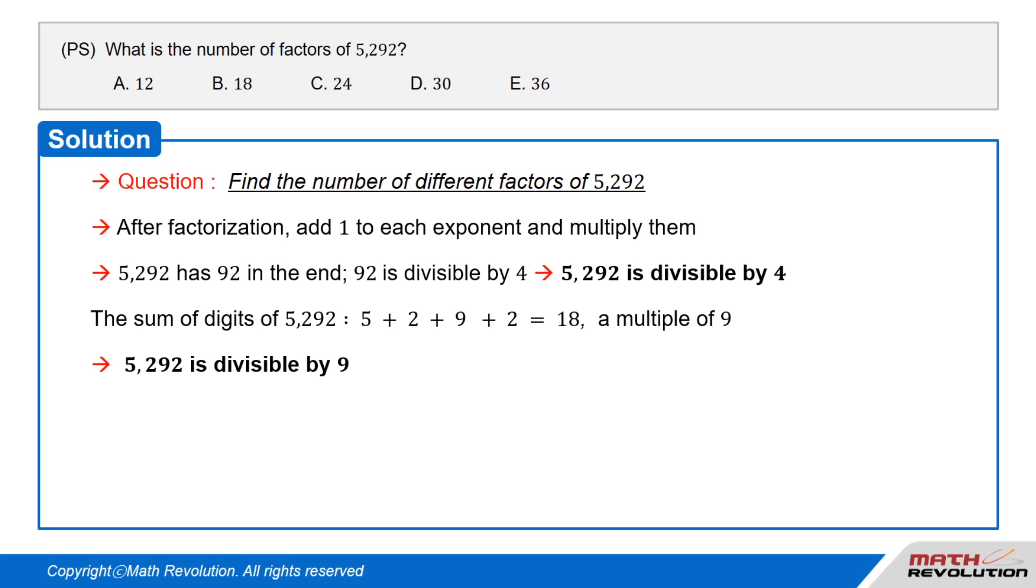Also, the sum of the digits of 5,292 is 5 plus 2 plus 9 plus 2 equals 18, a multiple of 9. So, 5,292 is also a multiple of 9.